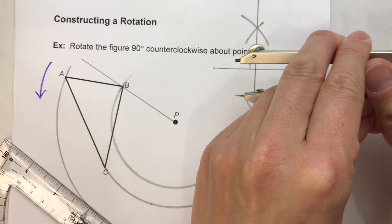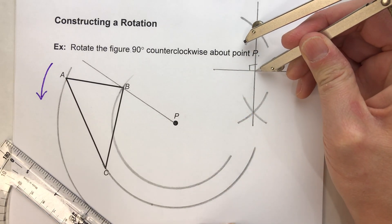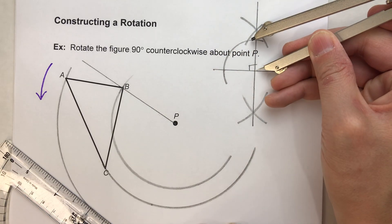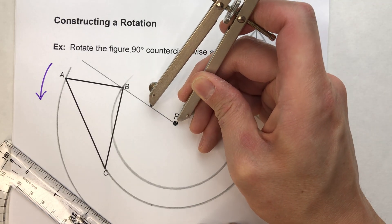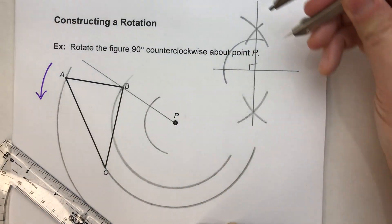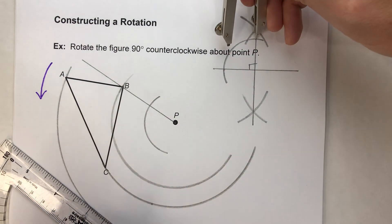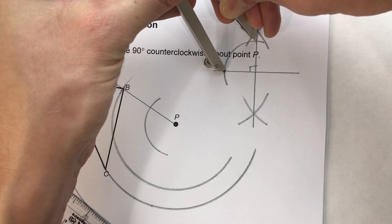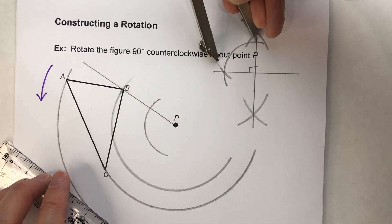And what I need to do is I need to duplicate this angle. So I'm going to take my compass and on this angle here, I'll swing an arc and I'll repeat that same arc over here off of point P. And then I'm going to take the distance of my angle from one end of the arc to the other. Right about there. That looks good.